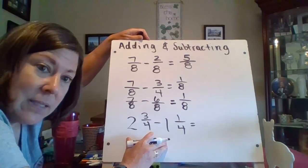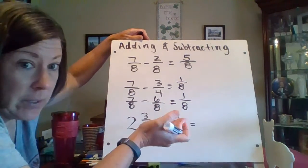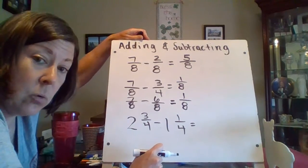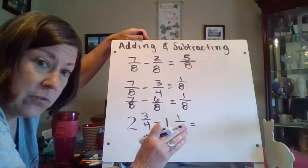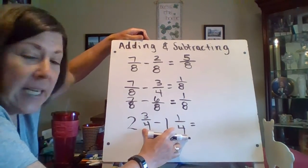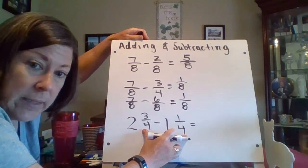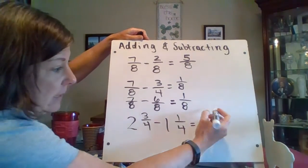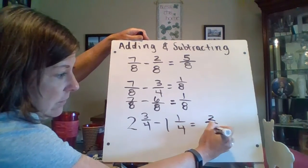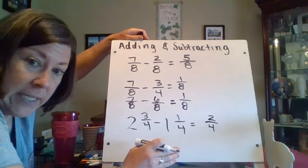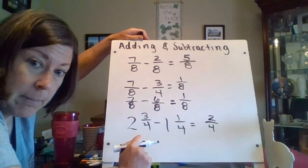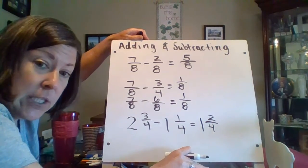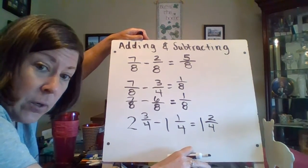My next example, I have mixed numbers. I'm going to subtract the fractions and subtract the whole numbers. Looking at the fractions first — can I subtract 3 fourths minus 1 fourth? Yes, I can. 3 fourths minus 1 fourth is 2 fourths. 2 minus 1 is 1. So my final answer is 1 and 2 fourths.